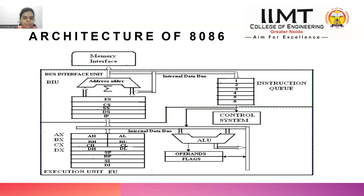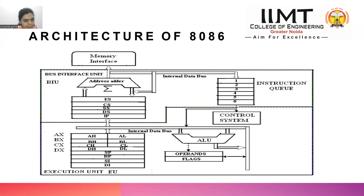The IP (instruction pointer) points to the next instruction to be executed. Another important term is the offset, which is the difference from the starting address to the location where you want to store or retrieve data. The offset register contains this offset value, while the segment registers contain the starting address. Together, these are needed to generate the physical address.